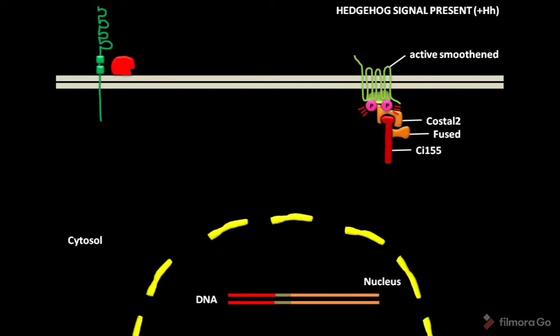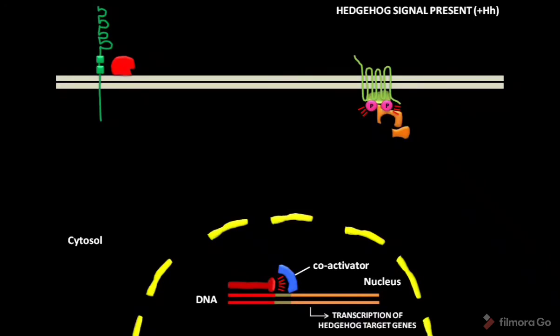Now, the full length CI155 enters nucleus. In the nucleus, CI155 binds to the co-activator to activate the transcription of Hedgehog target genes.